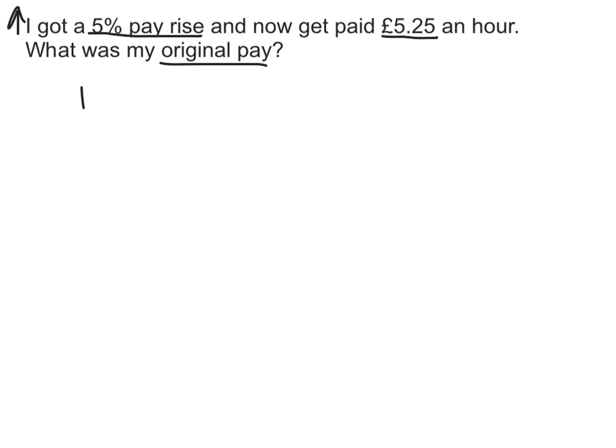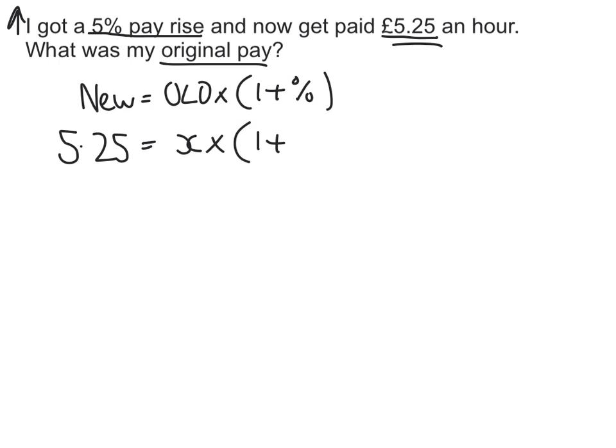My formula: new equals old times, now it's a percentage increase, it's one plus the percentage. New is £5.25, old is what I need to work out so we'll call that x, and one plus, and 5% as a decimal is 0.05.